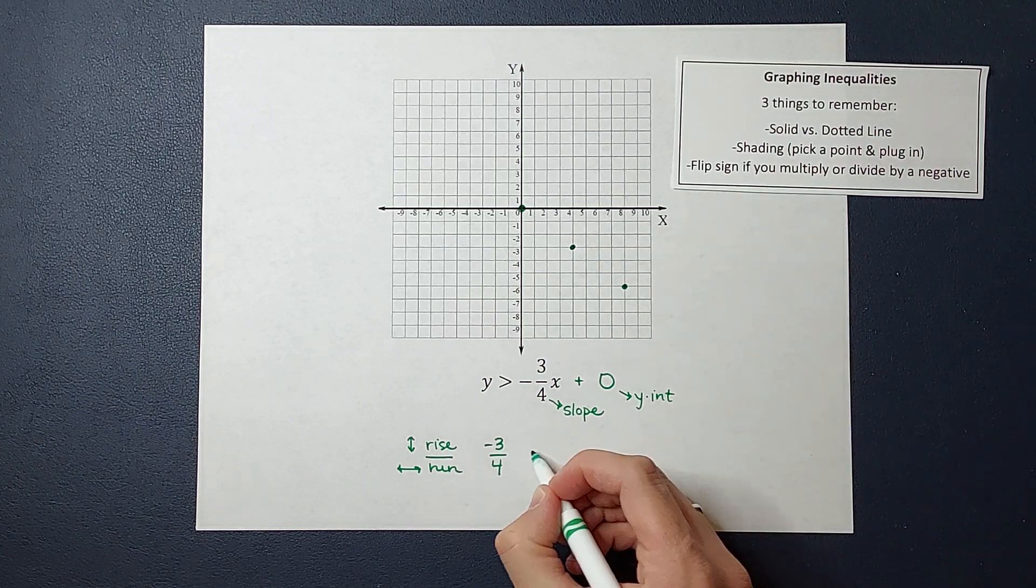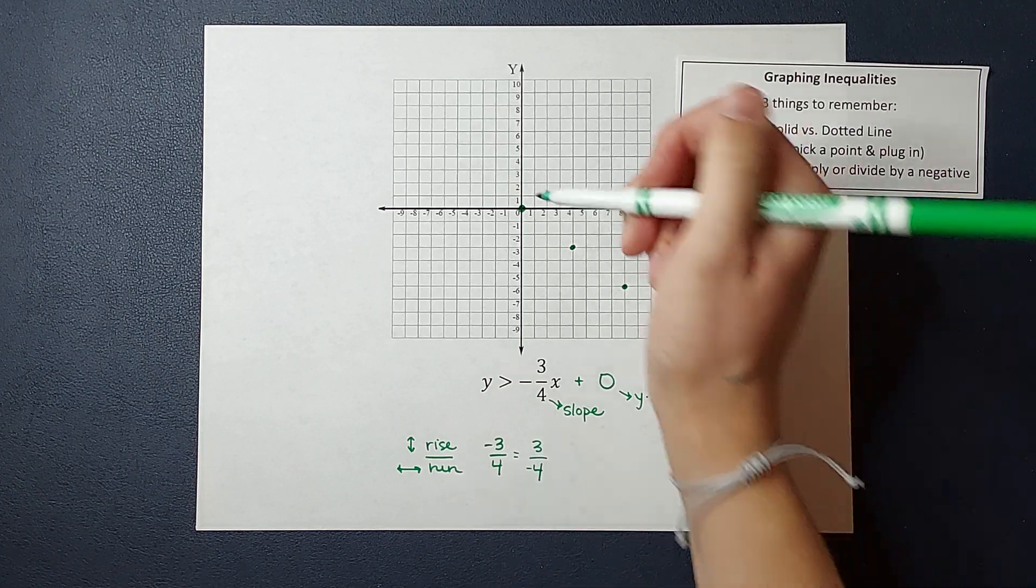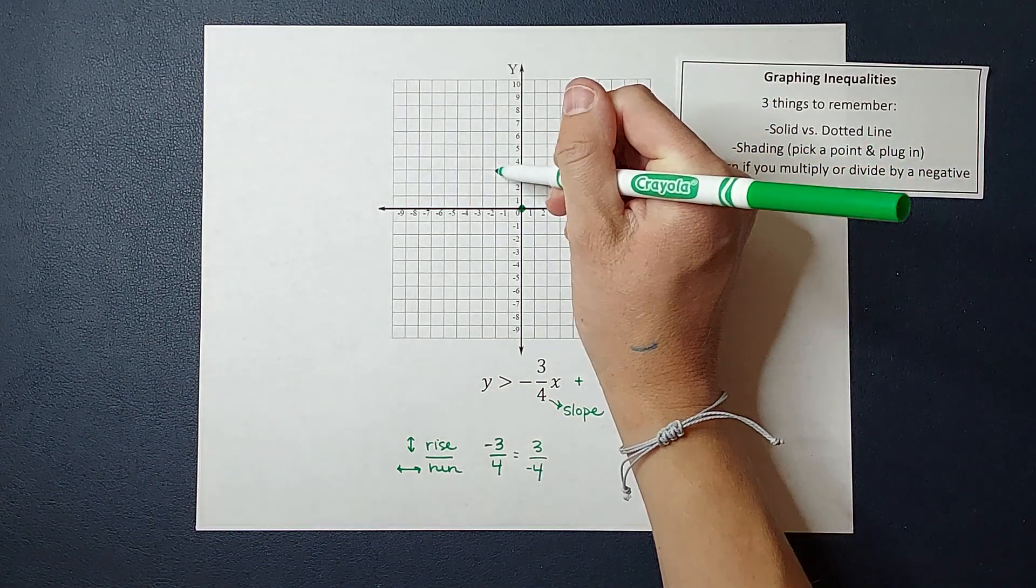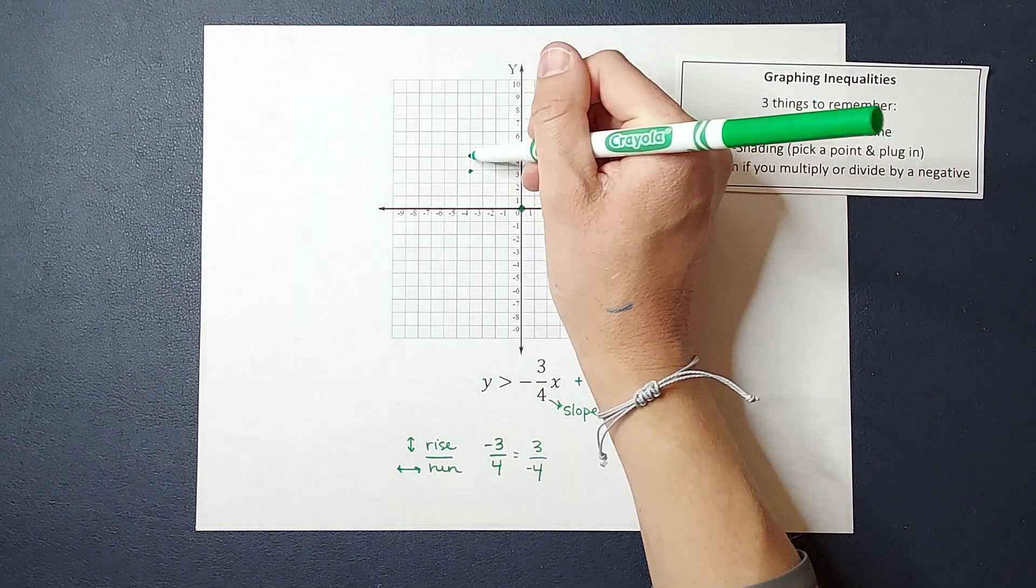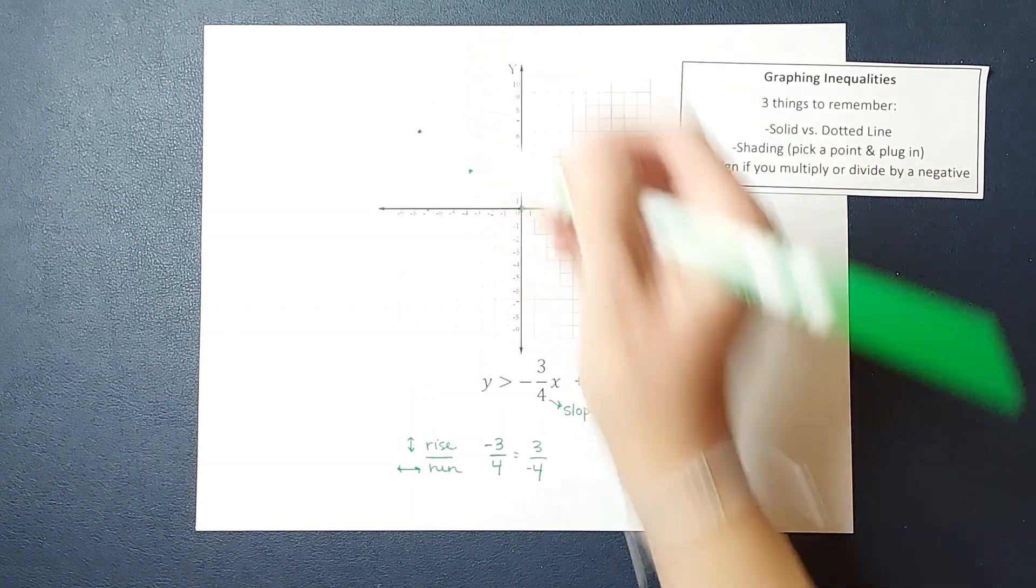And then I can also think of it as three over negative four, which means I go up three, left four. Up three, left four. One, two, three, four.